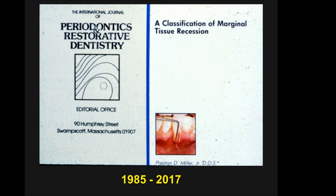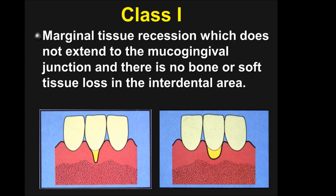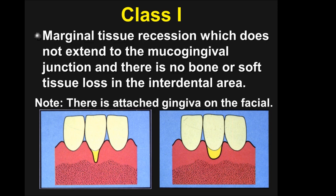This article was published in 1985, and now we are in 2017 — some 30-plus years later. The original definition said marginal tissue recession which does not extend to the mucogingival junction and there is no bone or soft tissue loss in the interdental area. But I think a more accurate term is that there is attached gingiva on the facial, because you may have a probing depth that goes beyond the mucogingival junction with keratinized tissue on the facial that is not attached — and that is not a Class I recession, that is a Class II recession.